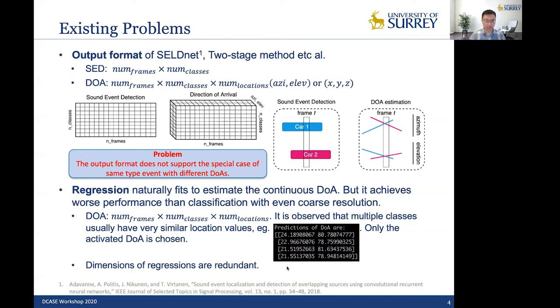So which means if we are given a certain amount of data, we're training a lot more dimensions than needed for regression, which makes regressions to be very hard to train.